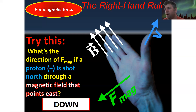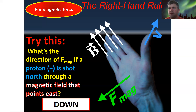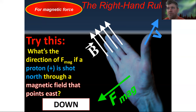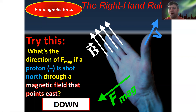If you have questions with this, let me know. Tomorrow in our class meeting we're going to run through a bunch of these examples to make you feel comfortable with it. It'll look weird at first and you'll get frustrated, but once you remember: thumb = positive particle, fingers = magnetic field, palm = force of the magnet — it starts to make a lot more sense.